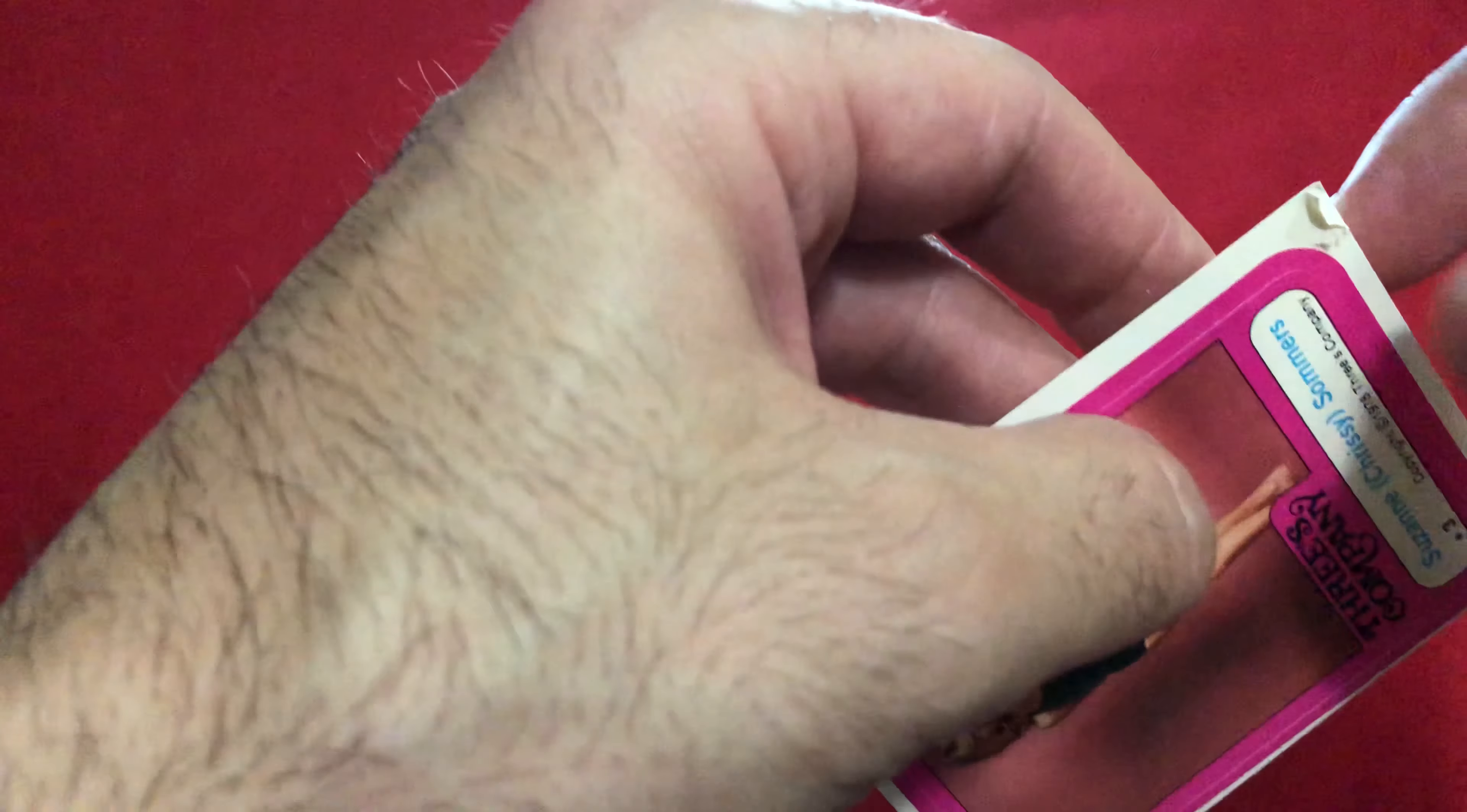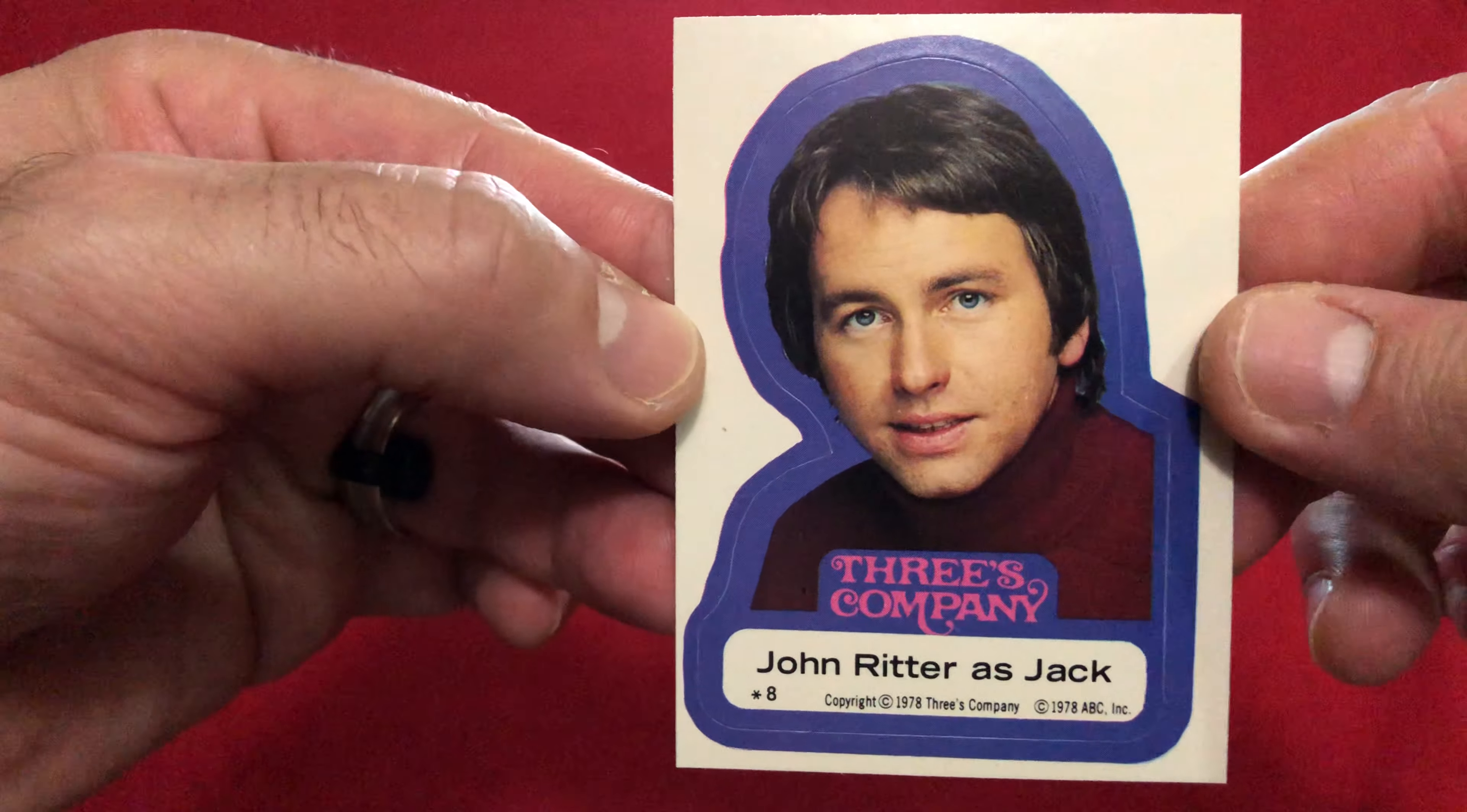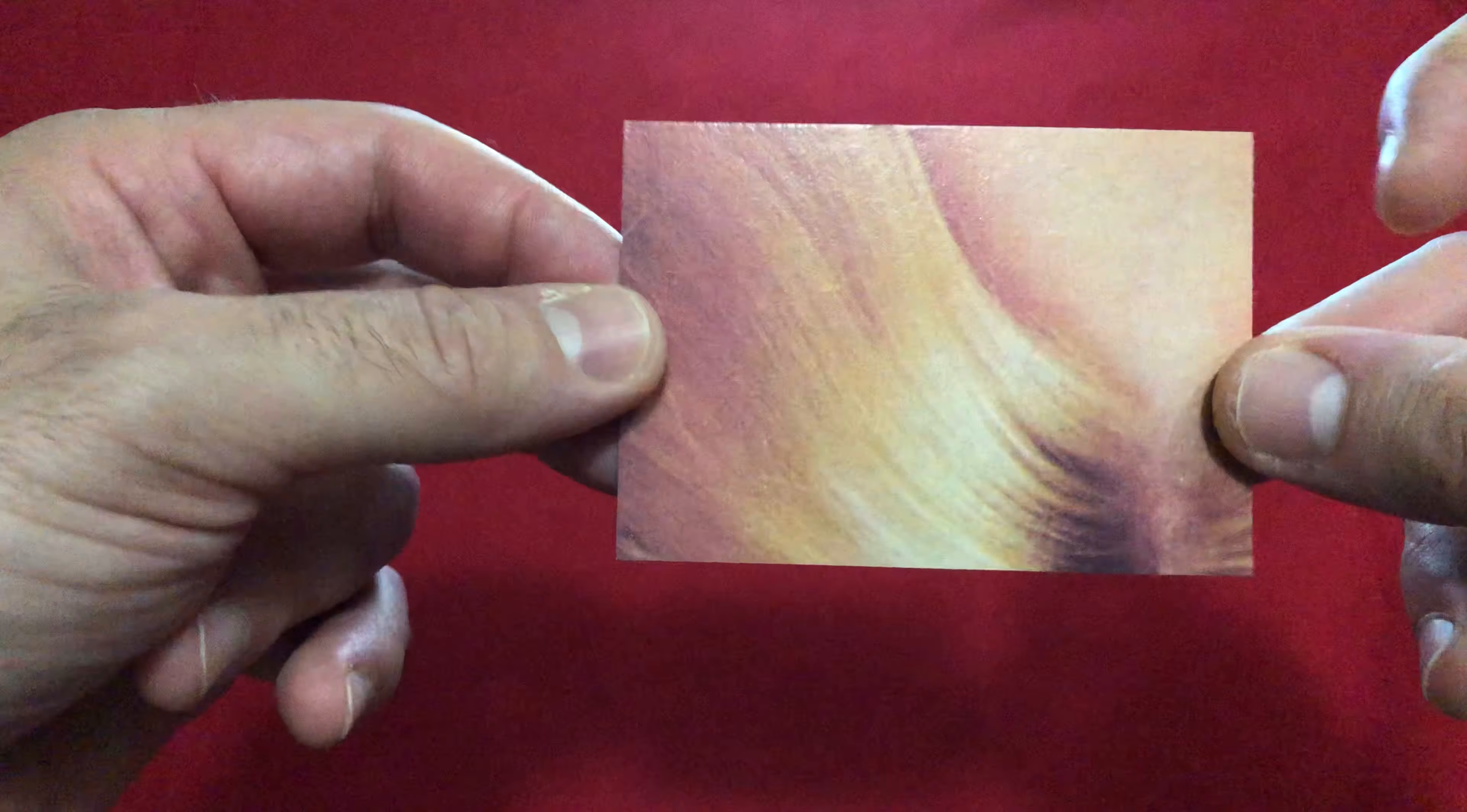Unfortunately the sticker is a little bit damaged down there. Next up, number 8, John Ritter's Jack. Last up, the puzzle piece, which I do not recall seeing, so that's also coming along. Both of these puzzle pieces.